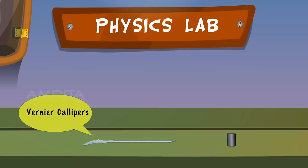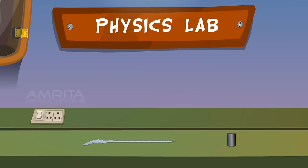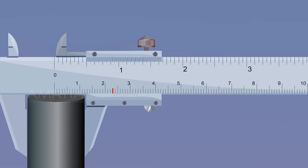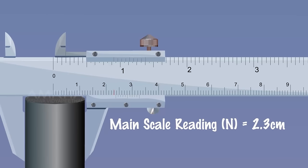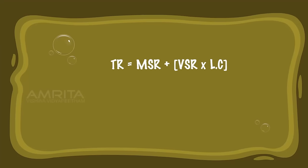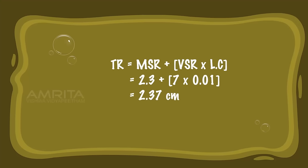Cylinder. Materials required: Vernier Calipers and a cylinder. Take the Vernier Calipers and the cylinder. Place the cylinder between the outer measuring jaws widthwise to measure its diameter. Note its MSR and VSR readings. Calculation: TR = MSR + (VSR × least count) = 2.3 + (7 × 0.01) = 2.37 cm, so D = 2.37 cm.